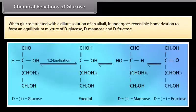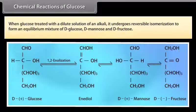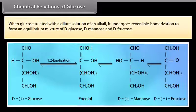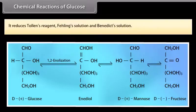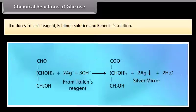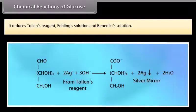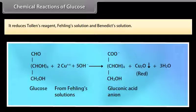When glucose is treated with a dilute solution of an alkali, it undergoes reversible isomerization to form an equilibrium mixture of D-glucose, D-mannose, and D-fructose. It reduces Tollens' reagent, Fehling's solution, and Benedict's solution.